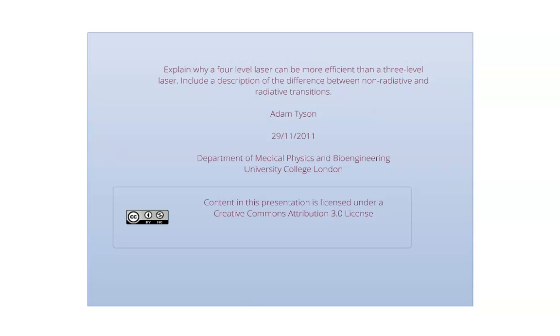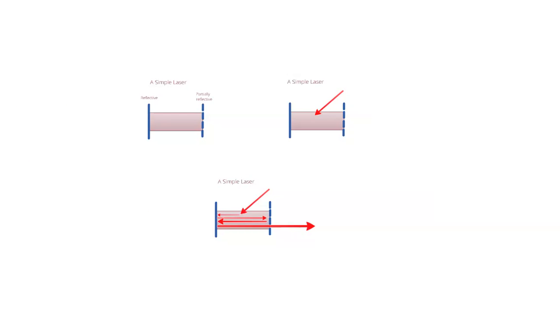Hi. As the title suggests, I'm going to be talking about why a 4-level laser can be more effective than a 3-level laser. But before I get into that, how do we achieve lasing?